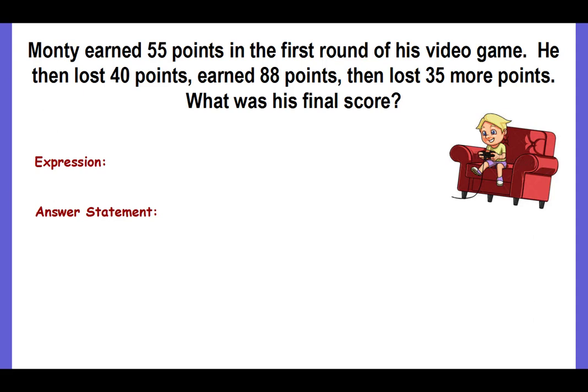Next example. Monty earned 55 points in the first round of his video game. He then lost 40 points, earned 88 points, then lost 35 more points. What was his final score? Pause the video. Solve this problem. Come back and check your answer.